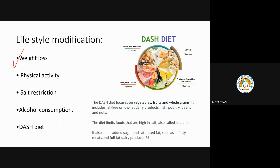Lifestyle modifications include: weight loss — because obesity is one of the causes; physical activity; and salt restriction. Salt restriction is important because salt is hydrophilic — it attracts water — so more salt intake makes the blood more liquid, increasing pressure.